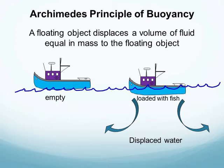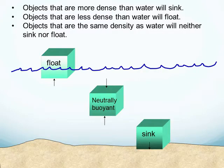If an object is more dense than the surrounding water it will sink; if it's less dense it will float; and if the object is the same density as the water then it's neutrally buoyant and it'll just float in the middle of the water column. That's why when you learn how to swim, you learn how to float — otherwise you would sink to the bottom.